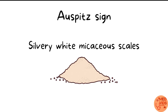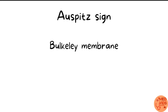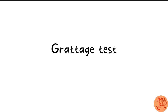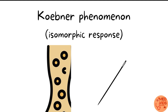You can demonstrate a clinical sign called Auspitz sign by scratching these lesions. There are three layers visible on scratching: first, silvery white micaceous scales fall off from the lesion. On scratching further, a layer called the Bulkley membrane underneath can be peeled off. Then on peeling the Bulkley membrane, the underlying bleeding points will be visualized.